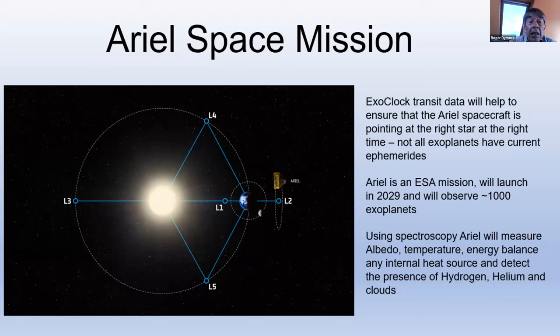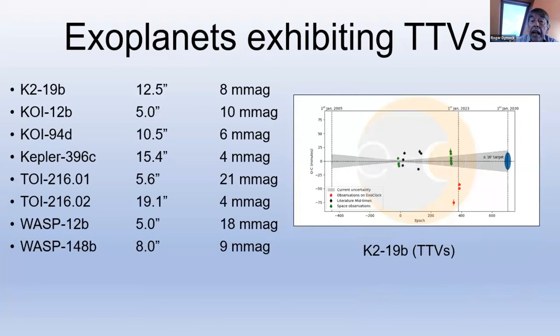The exoplanet transit data will help to ensure that the Ariel spacecraft is pointing at the right star at the right time, because some of the exoplanets have not been observed for some considerable time, maybe up to 10 years. Launch is in 2029 as it stands at the moment. If you want to try your hand, some transits from the ExoClock database are listed here and identified on the database as having TTVs next to the planet name. In the example, the vertical axis is the observed time minus the calculated time and the transit time variations are fairly obvious, as you can see here.